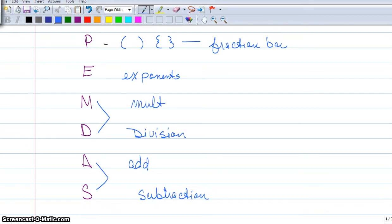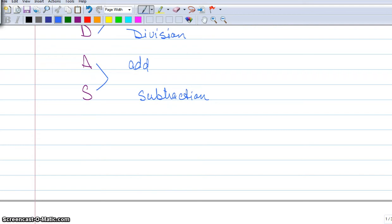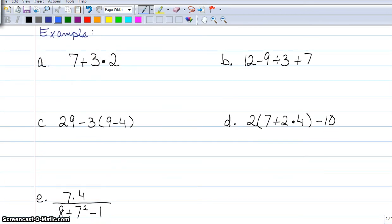Now let's look at a couple of examples. I have 7 plus 3 times 2. Well, I have to take care of 3 times 2 first because that's multiplication, so I have 7 plus 6, and 7 plus 6 is equal to 13.